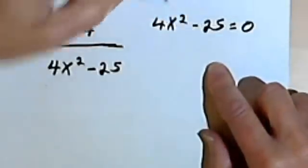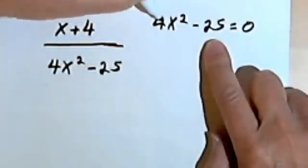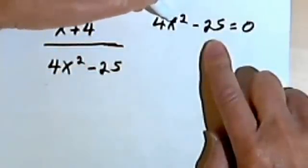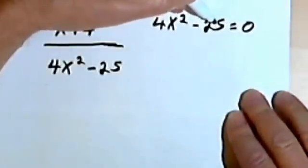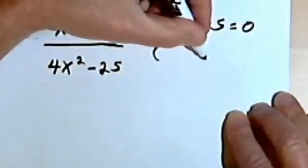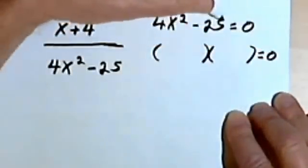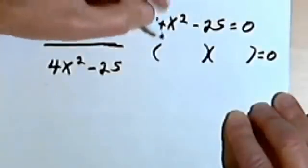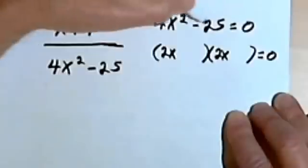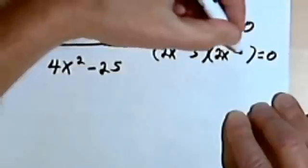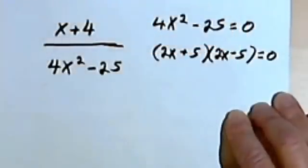I've got a negative sign between my two terms. And my first term, 4x squared, is a perfect square. And my second term, the 25, is a perfect square. So it looks like I've got the difference of two perfect squares. So I'll take the square root of 4x squared. That will give me 2x into 2x. The square root of 25 is 5. So I'll have a plus 5 and a minus 5.